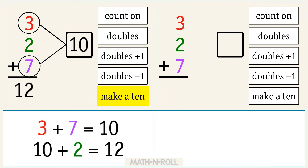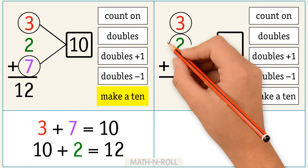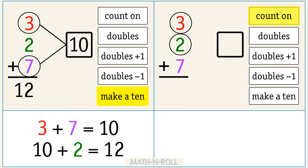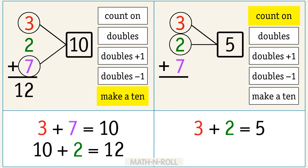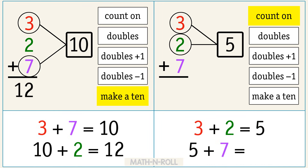Let's do the same problem using a different strategy. Circle 3 and 2. Use the count on strategy to solve. 3 plus 2 equals 5. Add 7 to 5 to get 12. So 3 plus 2 plus 7 equals 12. If you thought this video was helpful, please leave a like. For more videos like this, please subscribe.